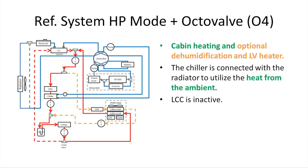This slide shows the mode when the refrigerant system is at heat pump mode and the octa valve is at O4 position. The cabin is heated by the cabin condenser, and the chiller is connected with the radiator to utilize heat from the ambient. The liquid-cooled condenser is inactive too.